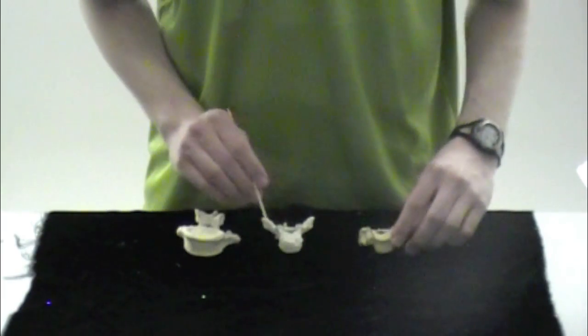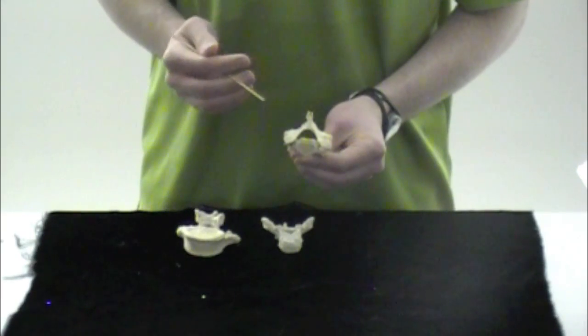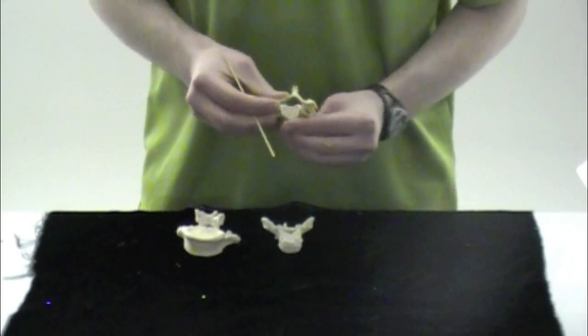Then going on to the spinous processes. The cervical vertebrae has a bifid spinous process, and that's going to be one way that you can identify it as a cervical vertebrae.